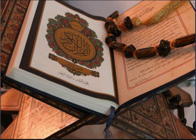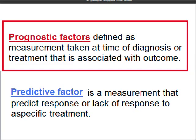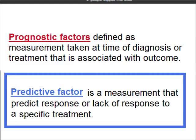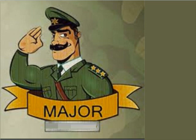Today we are going to discuss prognostic factors, which are defined as measurements taken at the time of diagnosis or treatment that are associated with outcome — prognostic factors for CA breast. The predictive factor is the measurement that predicts response or lack of response to a specific treatment, such as chemotherapy or hormone treatment. Now they are divided into major factors.